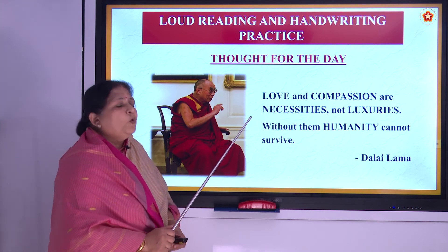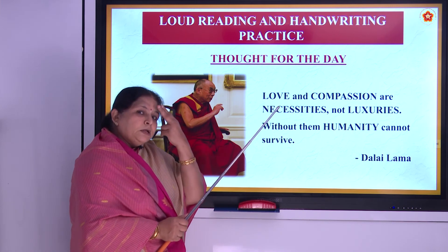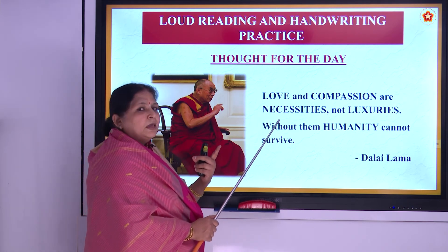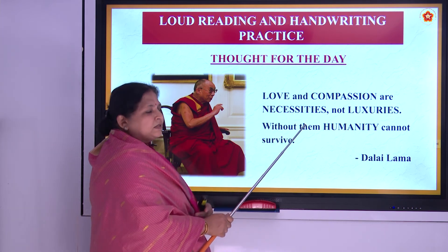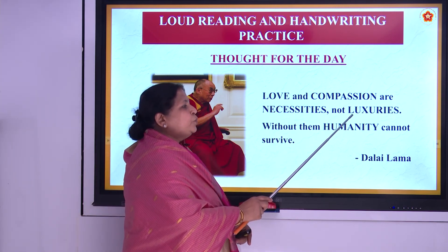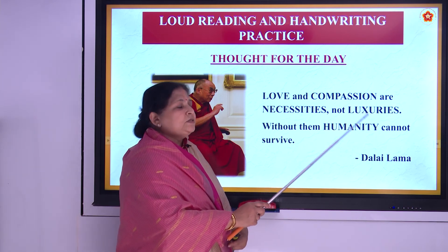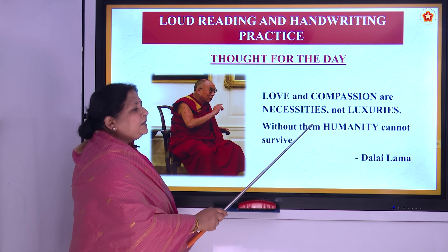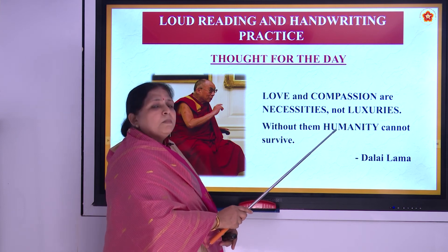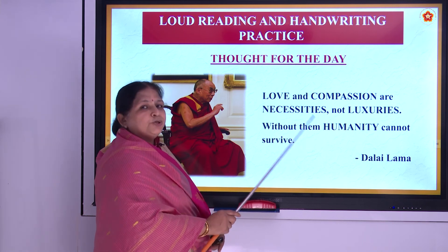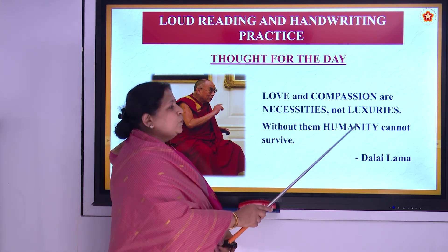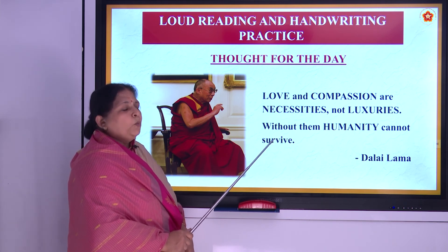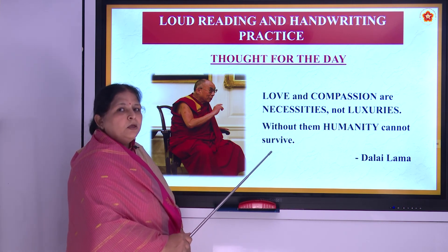Some of you may wonder why there is a double S — it is confusing in the beginning, so we say it letter by letter: N-E-C-E-S-S-I-T-I-E-S, necessities. Luxuries: L-U-X-U-R-I-E-S. Humanity: H-U-M-A-N-I-T-Y. Survive: S-U-R-V-I-V-E.